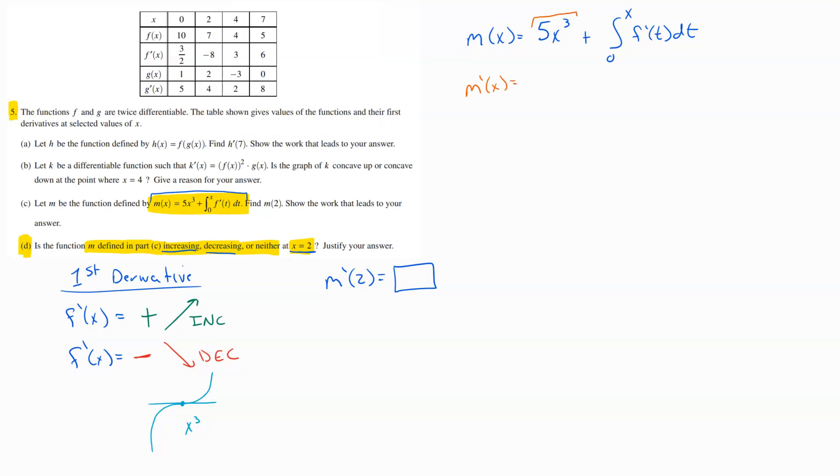So working through this, this piece here, that's just going to be our straight up power rule. We bring the power down and then subtract one from the power. So three times five gets us 15X, subtract one from the power gets us X squared.